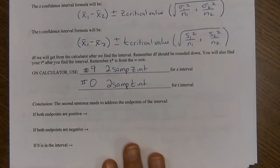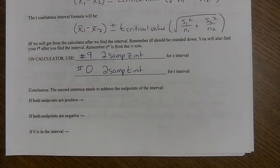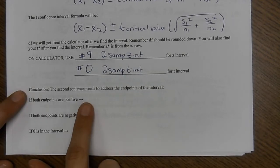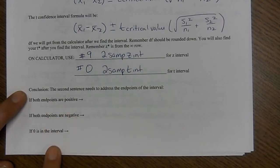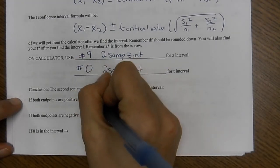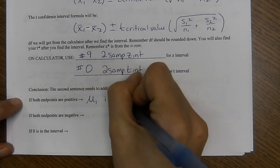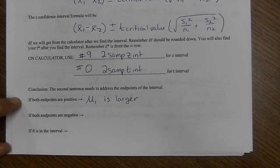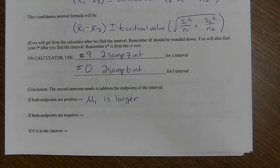Now, the conclusion is going to be a little bit different. The first sentence is the same as chapter nine. We are blank percent confident that the difference is between blank and blank. The second sentence, we have to talk about the endpoints because we're subtracting.